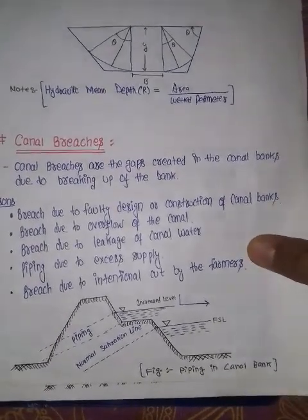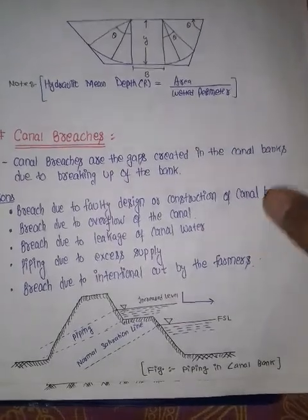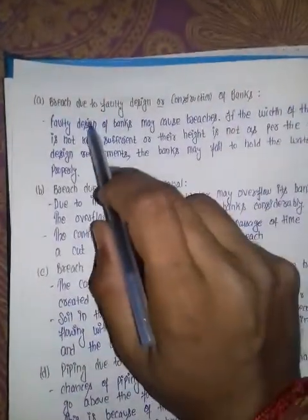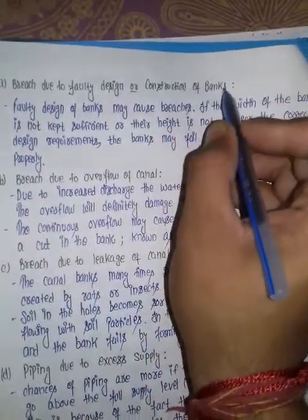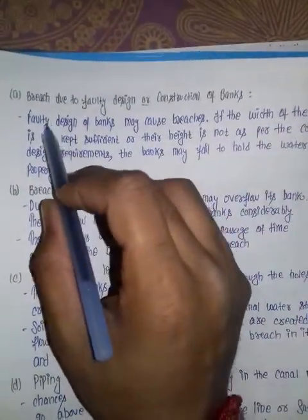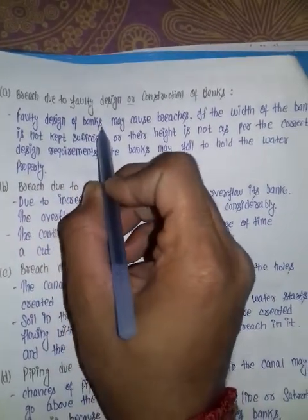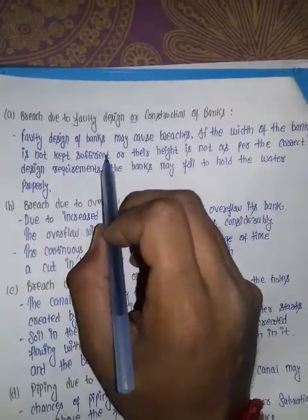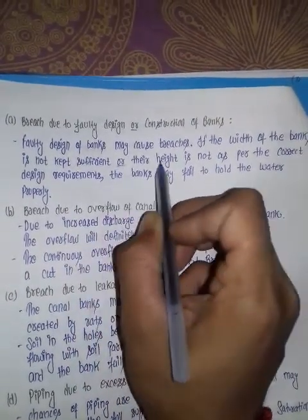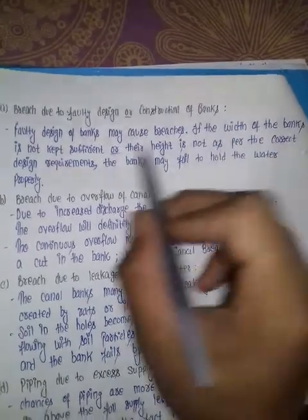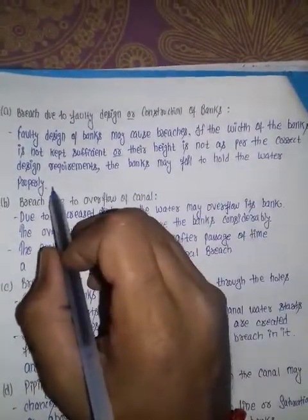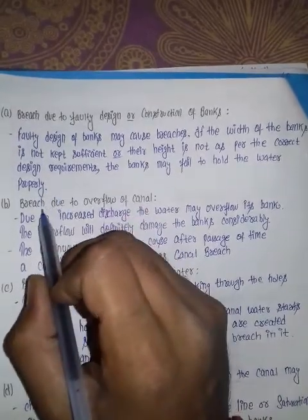The first reason is breach due to the faulty design or the construction of the canal bank. Faulty design of the banks may cause breaches if the width of the bank is not kept sufficient, or the height is not as per the correct design requirement, so the banks may fail to hold the water properly.